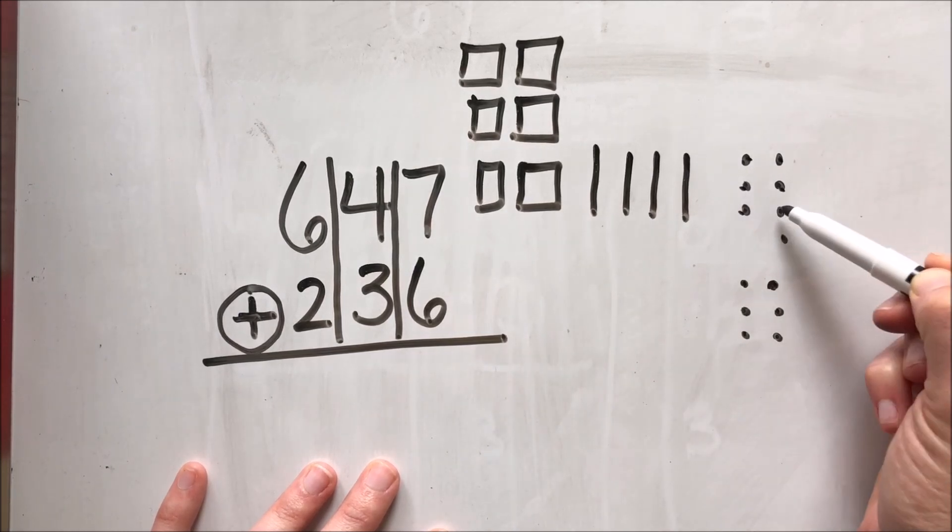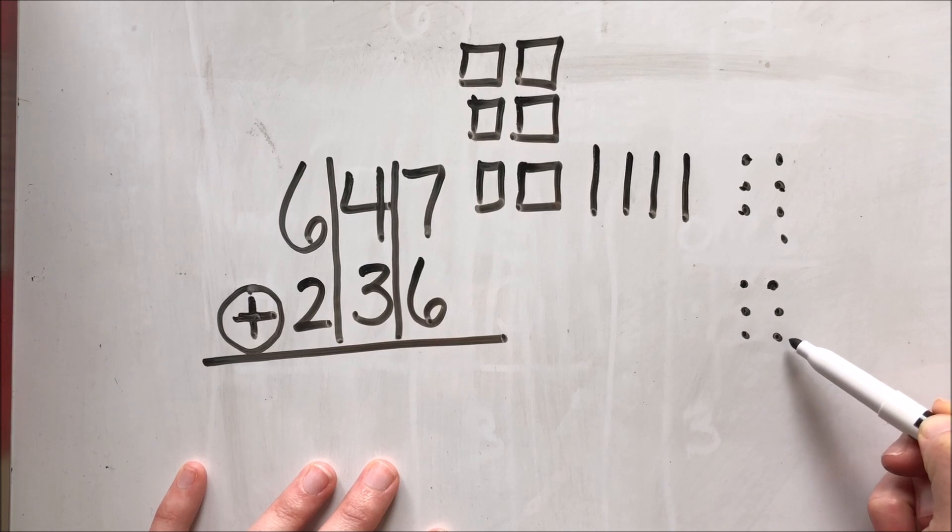So I have one, two, three, four, five, six, seven, eight, nine, ten, eleven, twelve, thirteen ones.